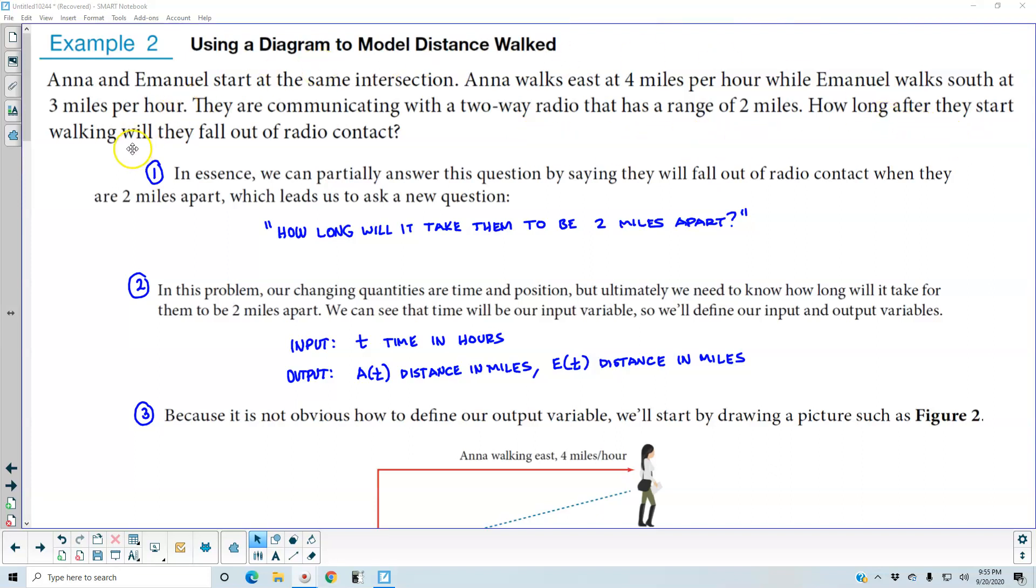How long after they start walking will they fall out of radio contact? Step number 1: In essence, we can partially answer this question by saying they will fall out of radio contact when they are 2 miles apart, which leads us to ask a new question: How long will it take them to be 2 miles apart?